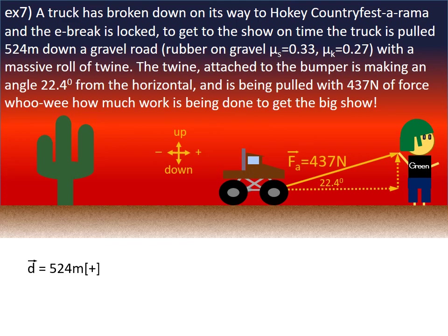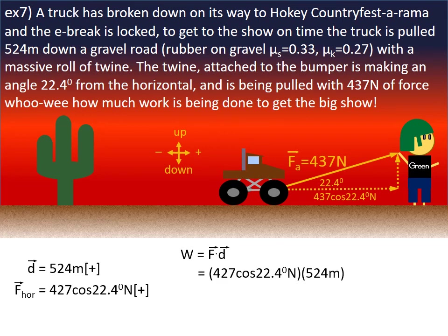The side that is doing work is the horizontal side. If 437 newtons is our hypotenuse and 22.4 degrees is the angle we have been given, then the horizontal side is equal to 437·cos(22.4°) newtons. So the force in the horizontal equals 437·cos(22.4°) newtons in the positive direction. Work equals force times displacement: that is 437·cos(22.4°) newtons × 524 metres.